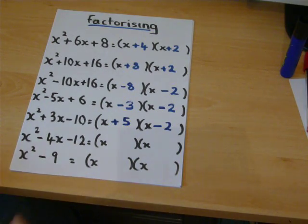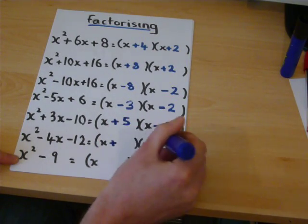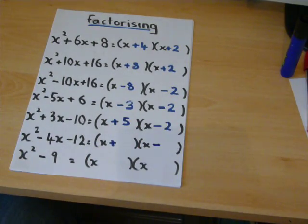And in the final example of this type, we have a negative, so we need a plus and a minus, the numbers times to make twelve.